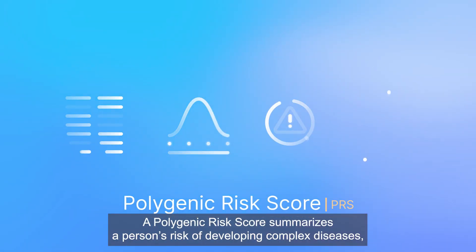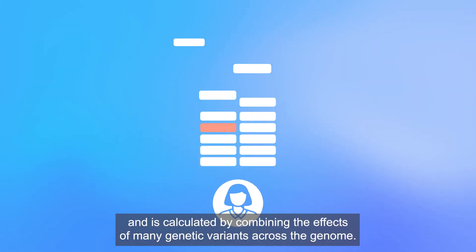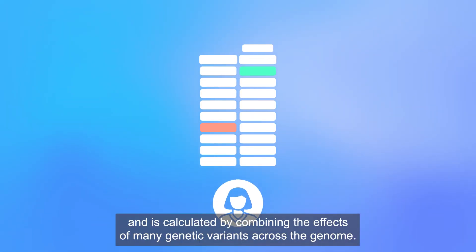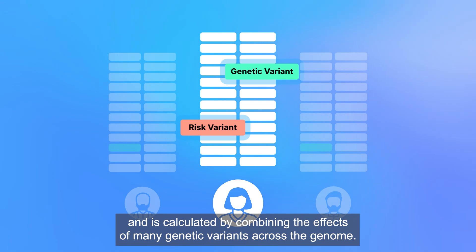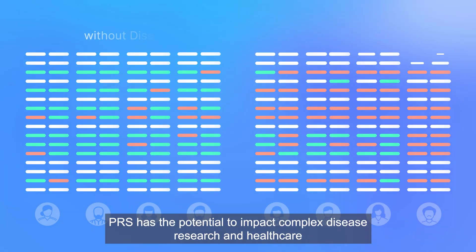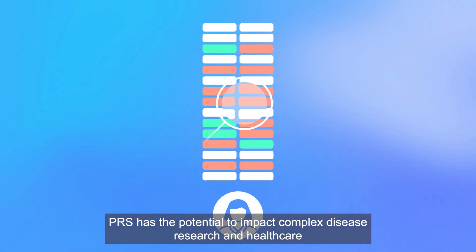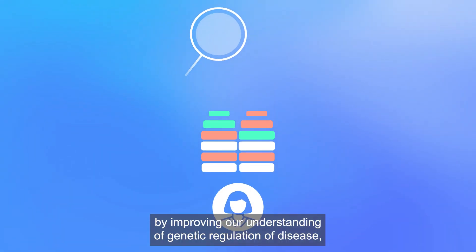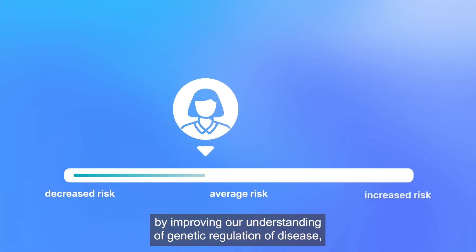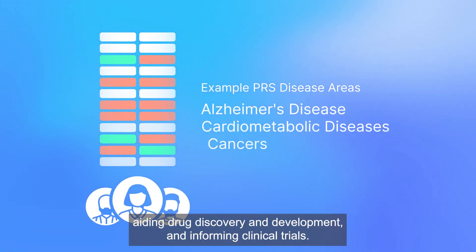A polygenic risk score summarizes a person's risk of developing complex diseases and is calculated by combining the effects of many genetic variants across the genome. PRS has the potential to impact complex disease research and healthcare by improving our understanding of genetic regulation of disease, aiding drug discovery and development, and informing clinical trials.